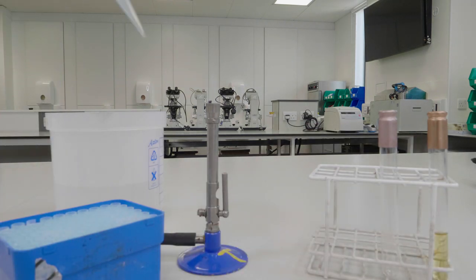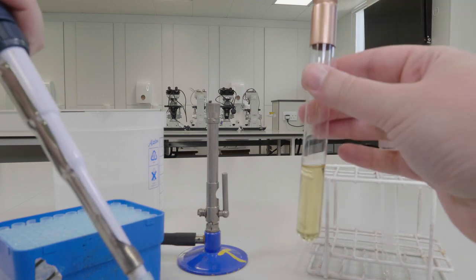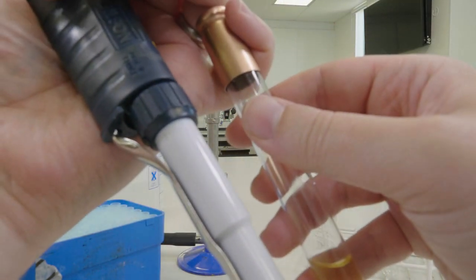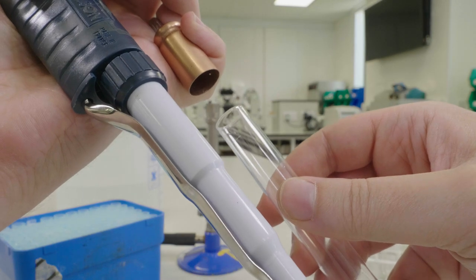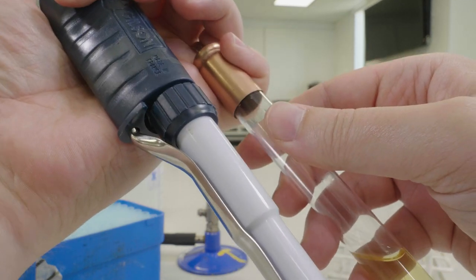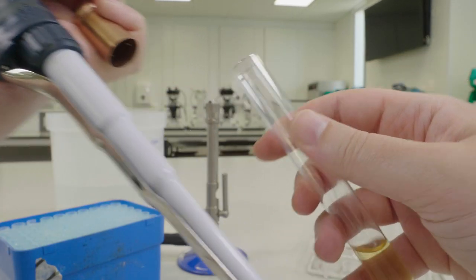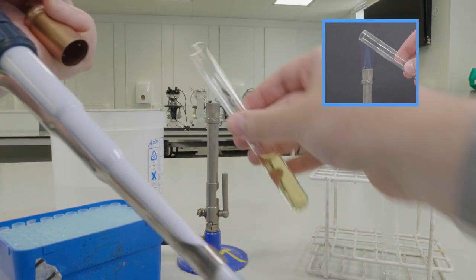Then take the tube you want to remove liquid from and remove the lid using the little finger of your dominant hand. You can then pass the open end of the tube through the hottest part of the Bunsen flame to kill any lingering organisms.